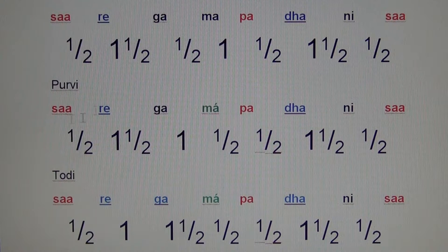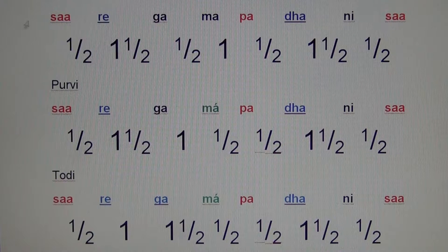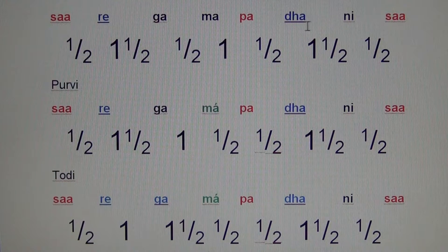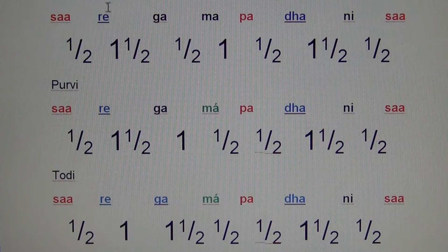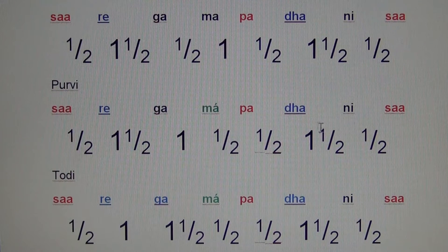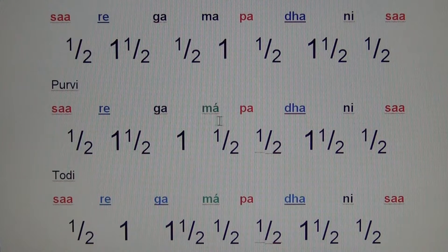For Bhairav, re and dha are lowered or flattened. For Purvi, we had the same except ma was sharpened.